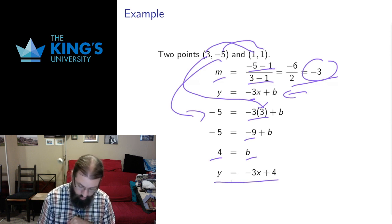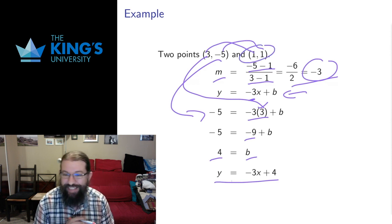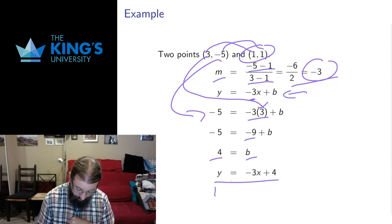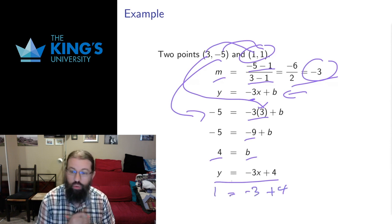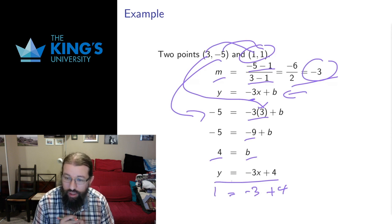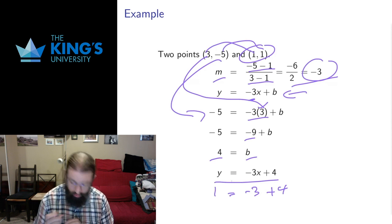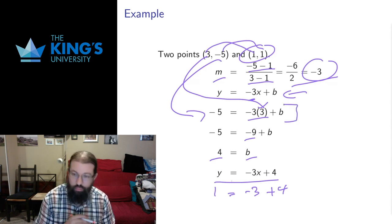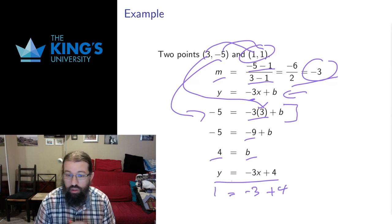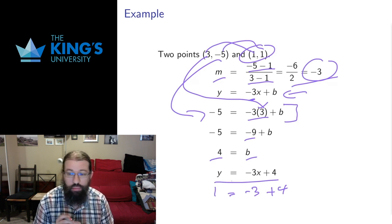If I'd put 1, 1 in instead, that would also work. We see that 1 does in fact equal negative 3 plus 4. 1, 1 does in fact satisfy the equation of this line. So at this step when you're solving for b, either point should work. If the points give you something different, then somewhere a mistake has been made.